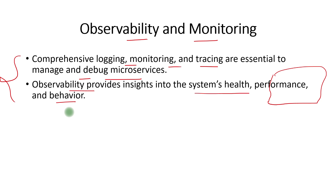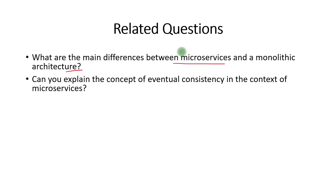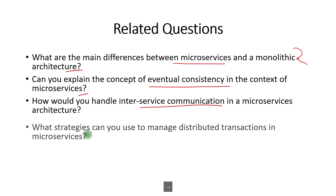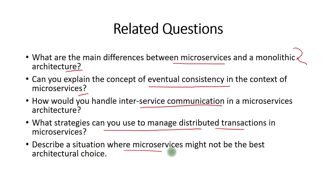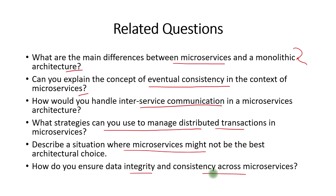That covers all 10 microservices architecture principles. If you have any questions, put them in the comment section. Related questions to study include: what are the main differences between microservices and monolithic architecture? Can you explain eventual consistency in the context of microservices? How do you handle inter-service communication? What strategies manage distributed transactions in microservices? Describe a situation where microservices might not be the best choice. How do you ensure data integrity and consistency across microservices? Make sure you have a proper understanding of these before your interview.